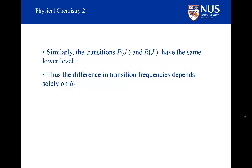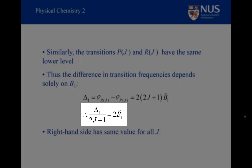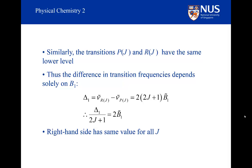A similar analysis can be done for the combination of P(J) and R(J). The difference between these two transitions is denoted as Δ₁ and it will give us information about B₁. If we divide Δ₁ by (2J plus 1), we get 2B₁. And again, this will be the same value for all values of J.